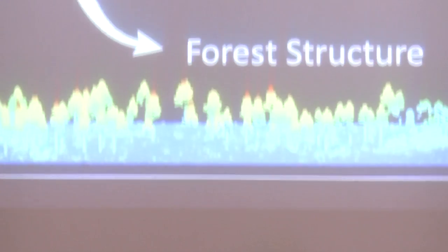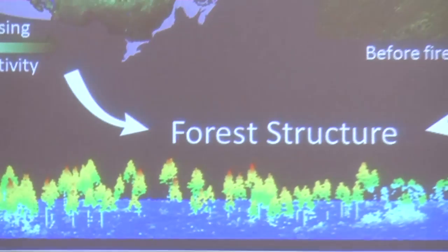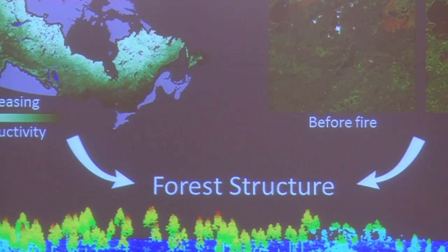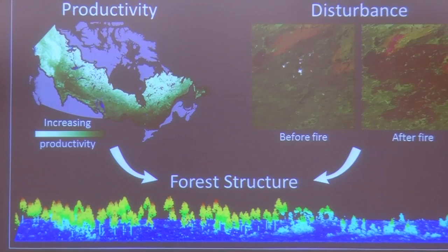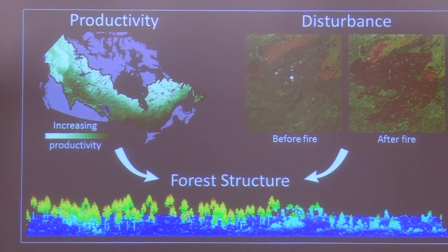Additionally, productivity is increasing across Canada as temperatures are rising, and this is sequestering more carbon from the atmosphere into the forests. If we want to understand how our forests are going to change in the future, we need to understand the combined effects of these increases in productivity and changes in disturbances on how these shape the structure of our forests.